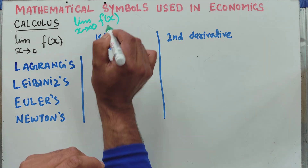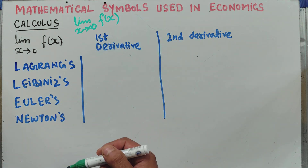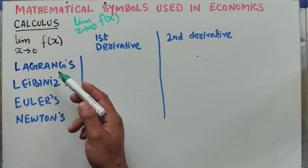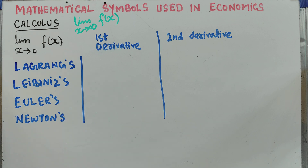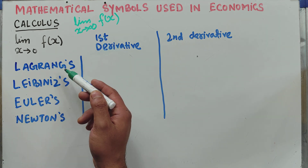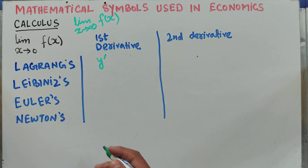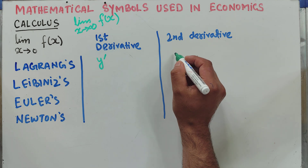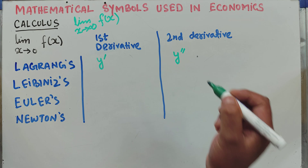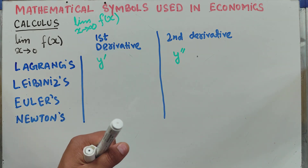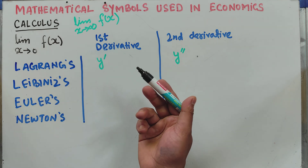Next we have derivative notations. There are actually four kinds of derivative notations that we use: first is Lagrange's notation, second is Leibniz, then we have Euler's notation and Newton's notation. The first derivative shown by Lagrange's notation is written as y prime, which denotes the first derivative of a function, and the second derivative is denoted by y double prime. This is Lagrange's notation that we often come across in economics and calculus.